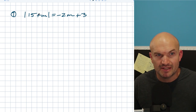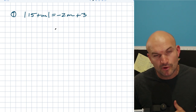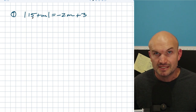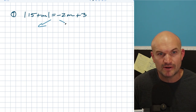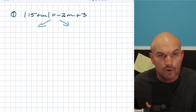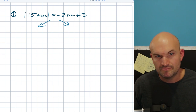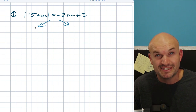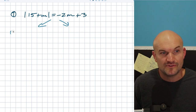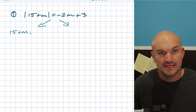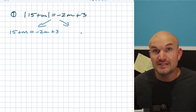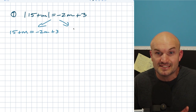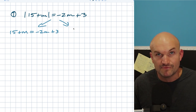So in this case, we have the absolute value of 15 plus m equal to negative 2m plus 3. The important thing here is that our absolute value is isolated. So now what we can do is simply create those two cases, just like we did for more basic examples. Take everything as it is without the absolute value: 15 plus m equals negative 2m plus 3. And then we also have to do the negative version, because that absolute distance could be in the positive or negative direction.